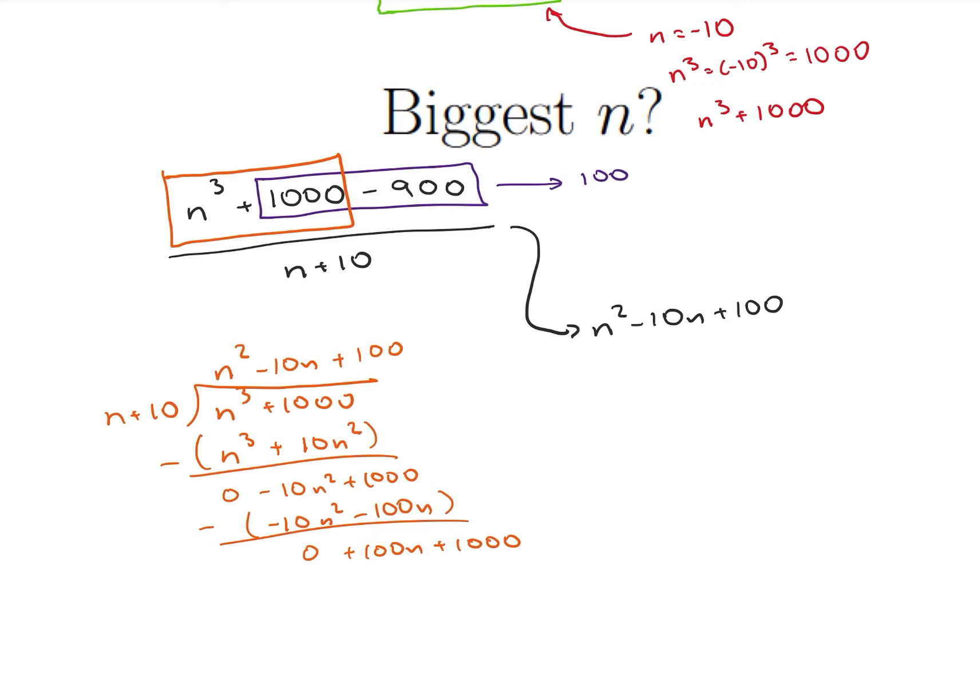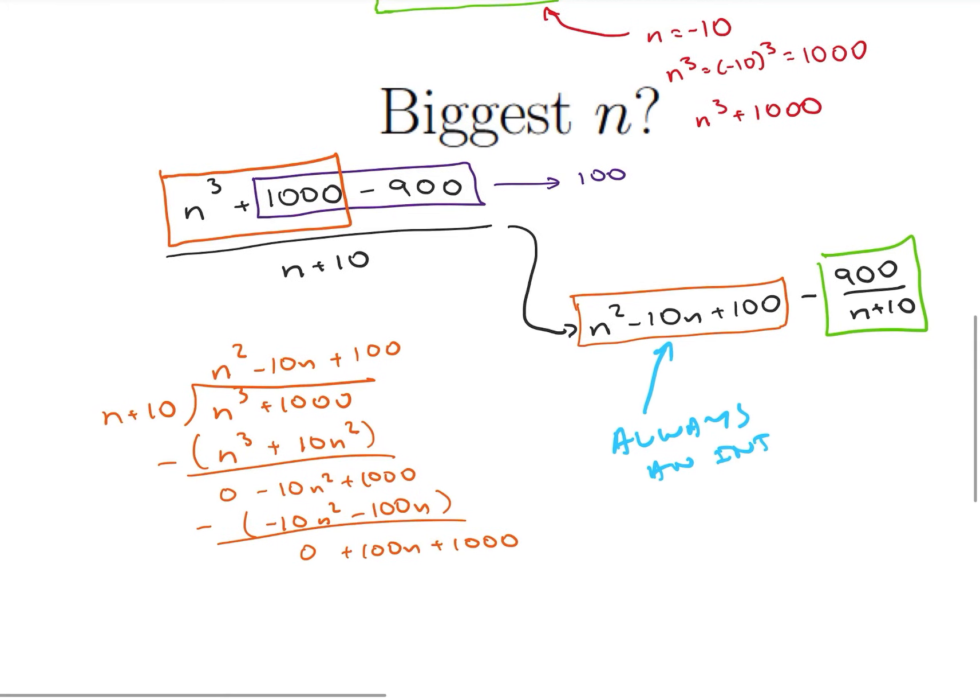That's my orange block divided by n plus 10 minus 900 divided by n plus 10. So this becomes a little bit easier problem. So what do we notice? We notice that this guy is always an integer. Why is it always an integer? Because I have an integer squared minus 10 times an integer plus 100, it's going to be an integer. So my problem has now become, when is this guy an integer?